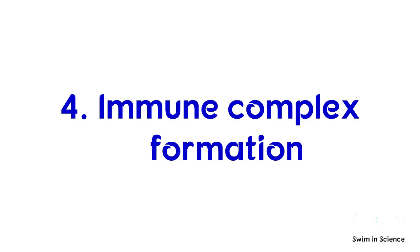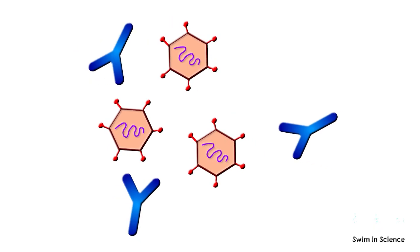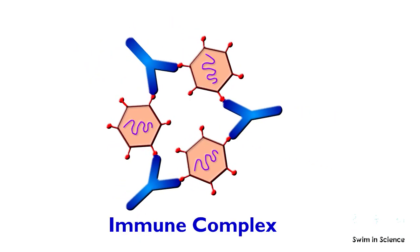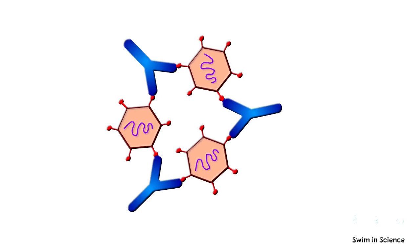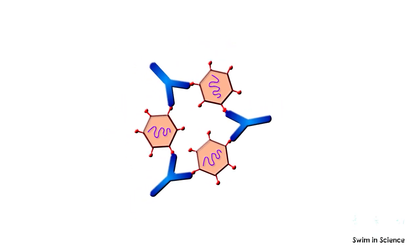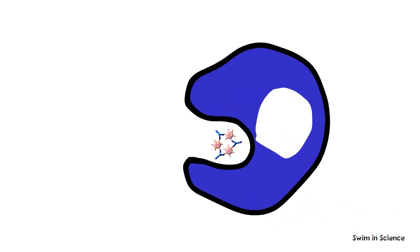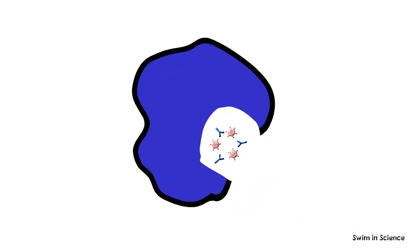The fourth function is immune complex formation. The binding of multiple antigens and antibodies together can form immune complexes. Complex formation limits the antigens diffusing ability, making it easier for phagocytosis, and allows simultaneous destruction of several pathogens.